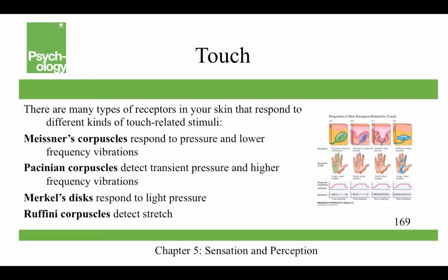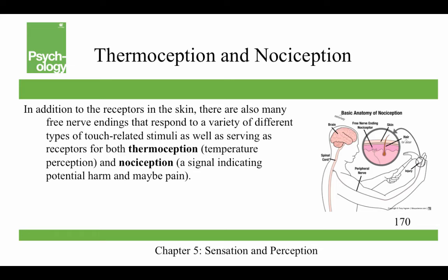There are many types of receptors in your skin that respond to different kinds of touch-related stimuli. Meissner's corpuscles respond to pressure and lower frequency vibrations. Pacinian corpuscles detect transient pressure and higher frequency vibrations. Merkel's discs respond to light pressure, and Ruffini corpuscles detect stretch. In addition to skin receptors, there are many free nerve endings that respond to a variety of touch-related stimuli and serve as receptors for thermoception (temperature perception) and nociception (a signal indicating potential harm and pain).